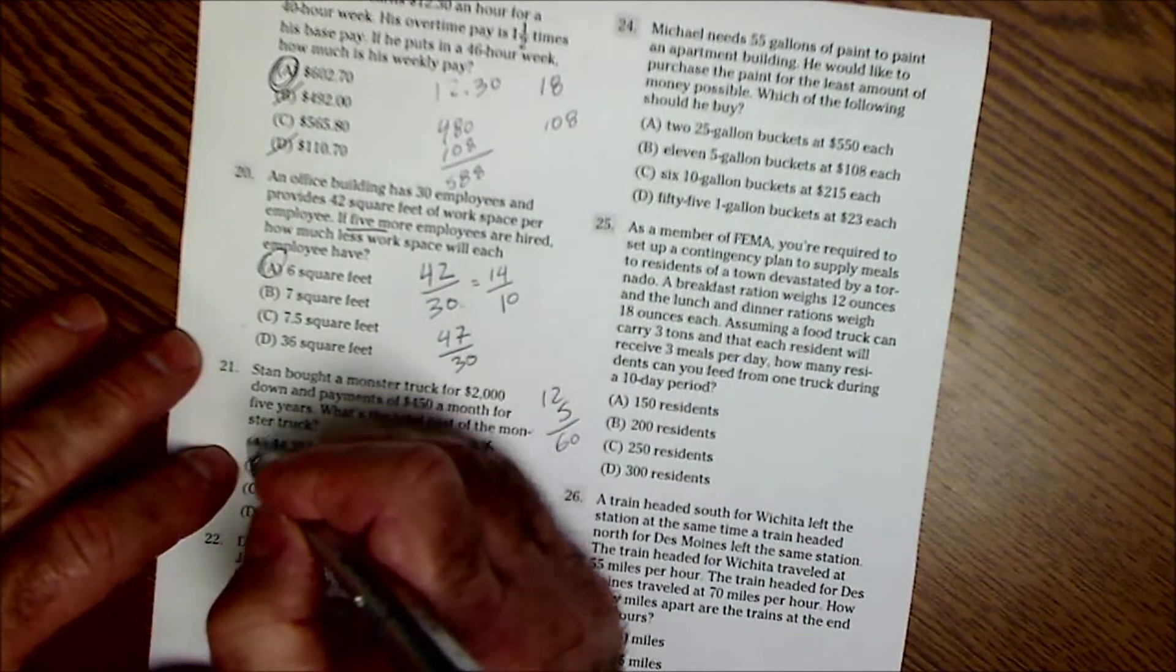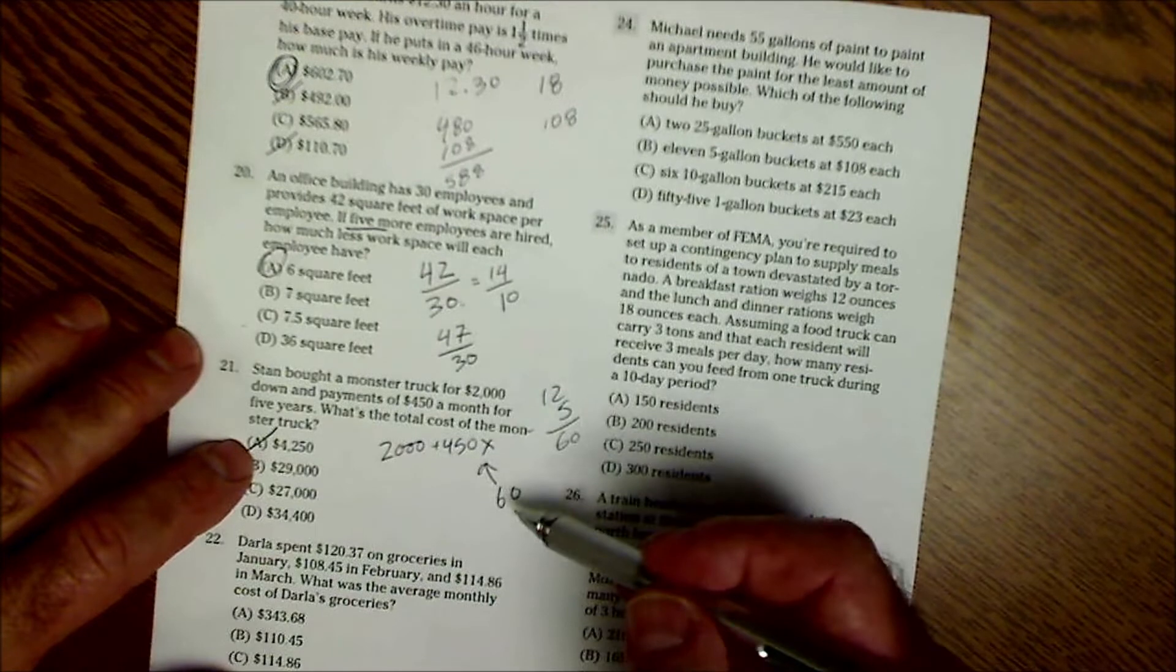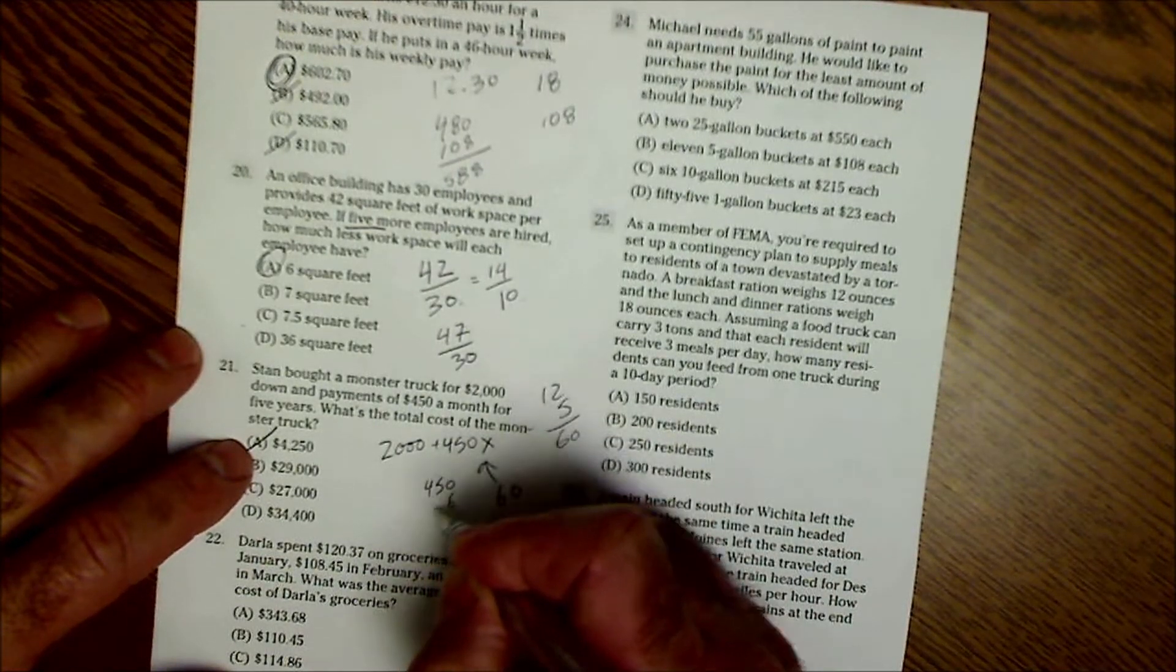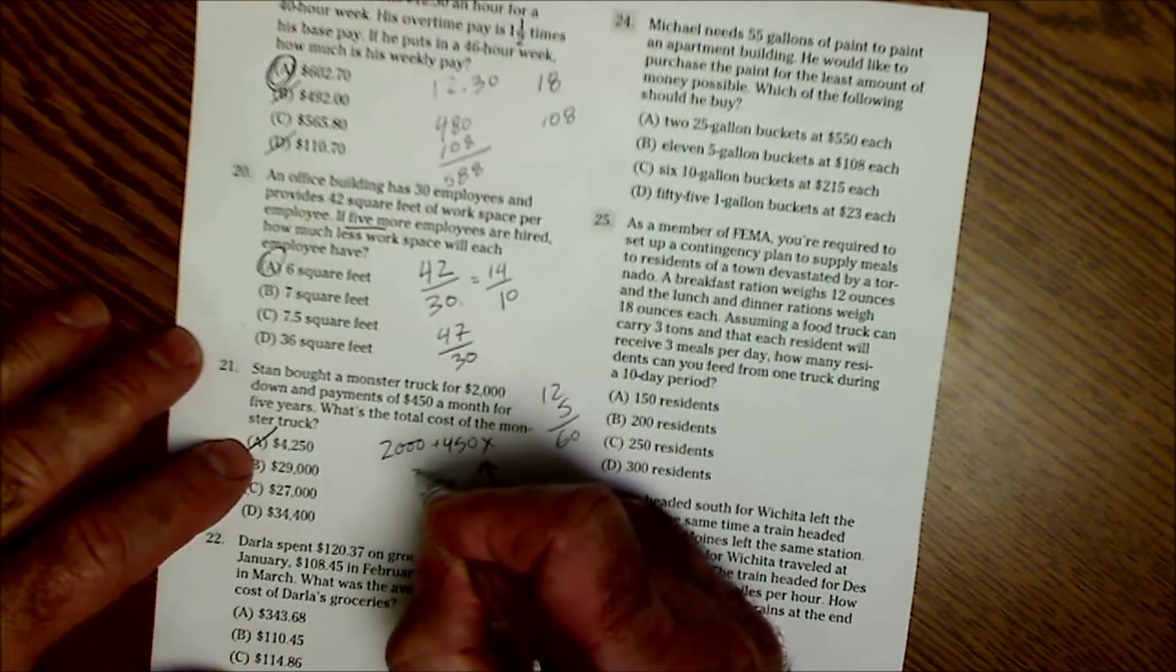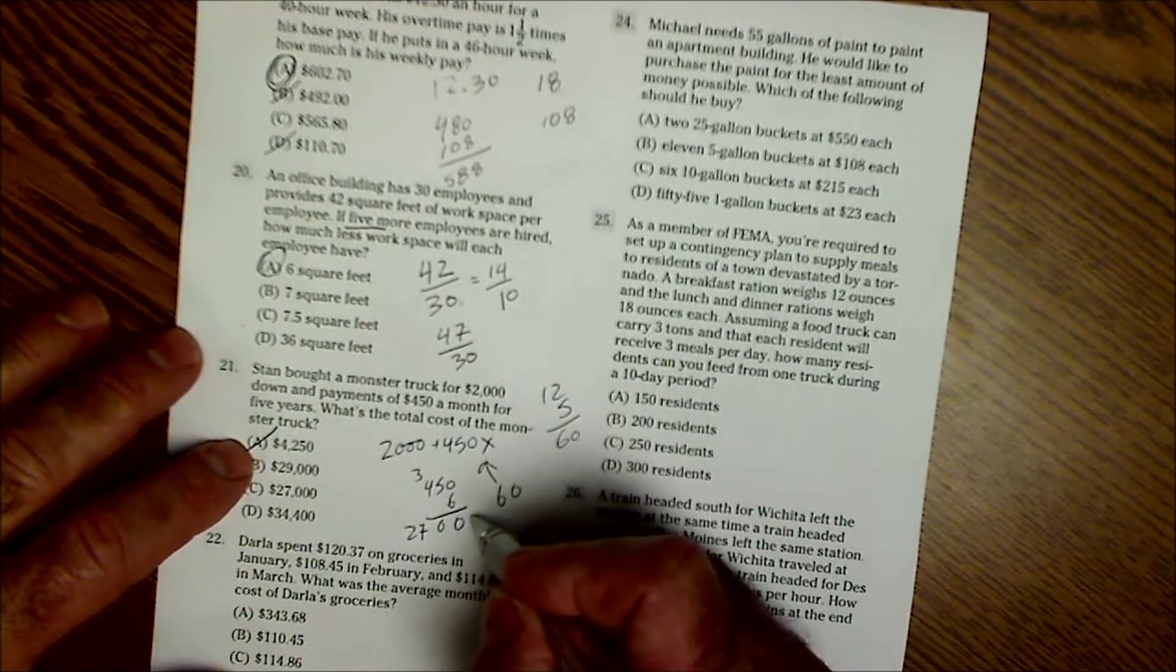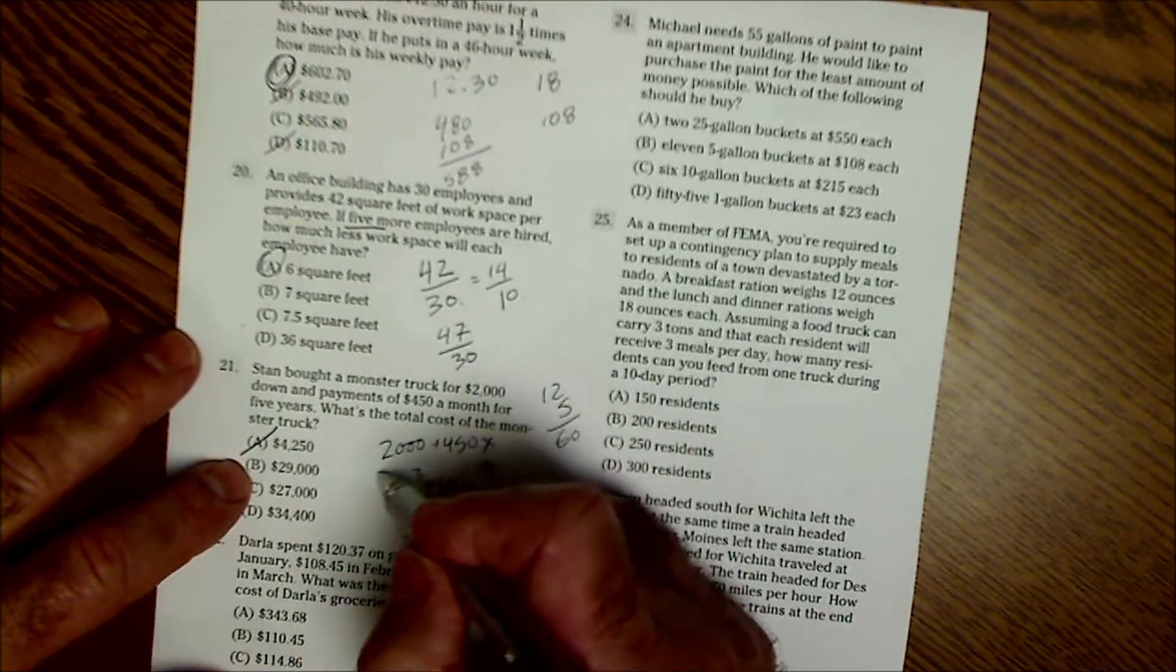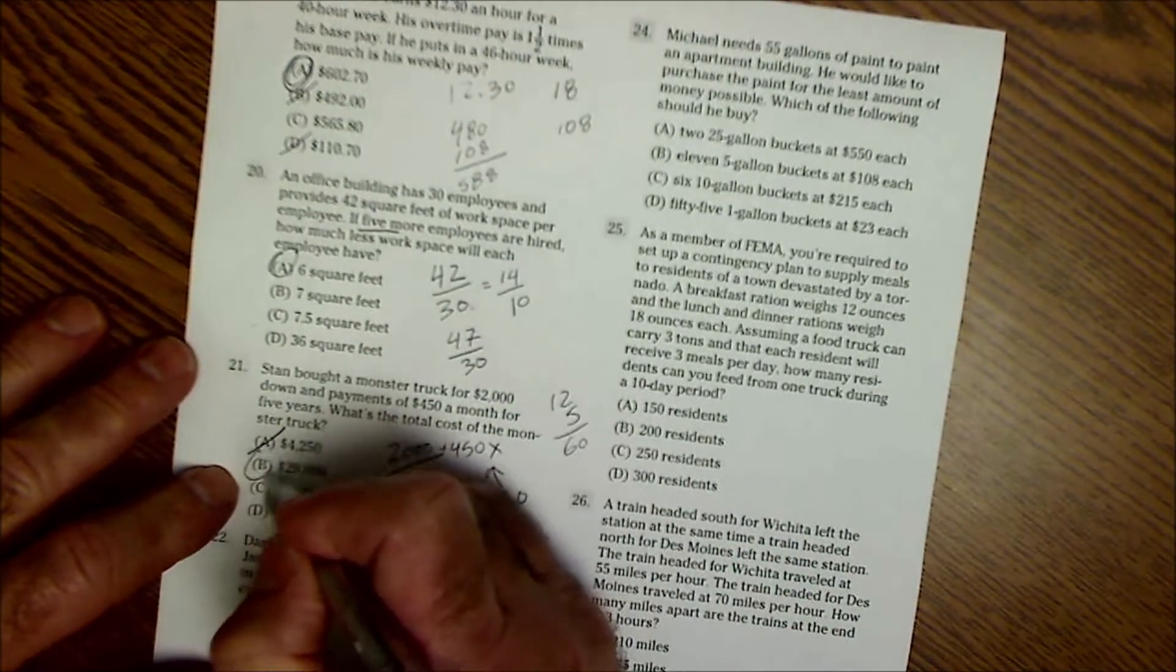I cross that one out right away because it doesn't even make sense. And then I think I do have to do this $450 times 60. That gives me $27,000 plus the $2,000 down to give me $29,000.